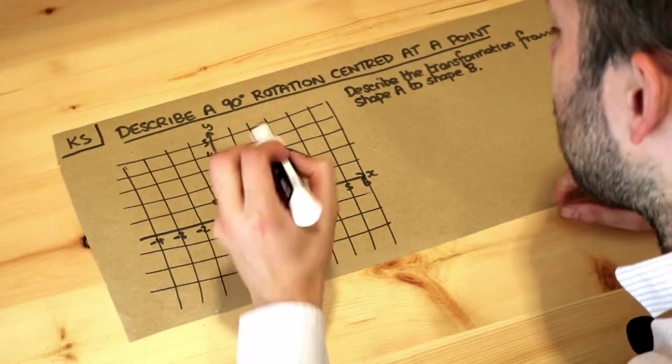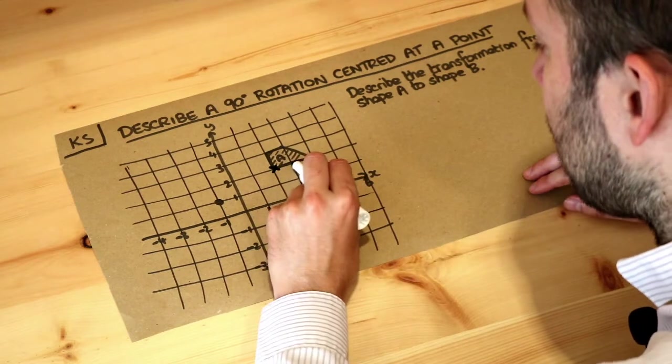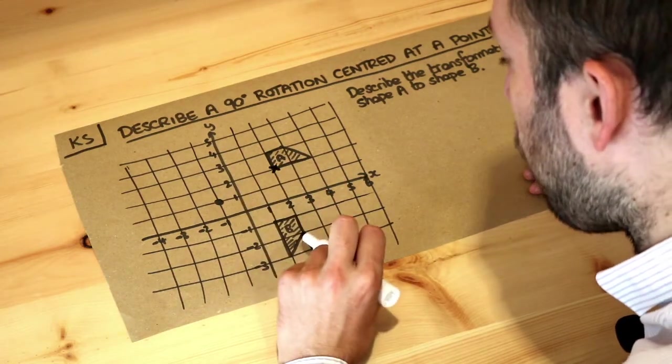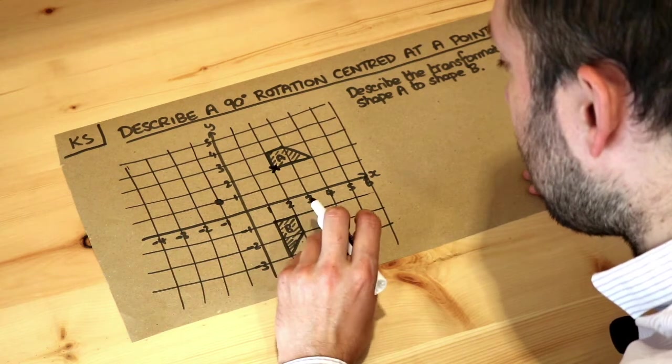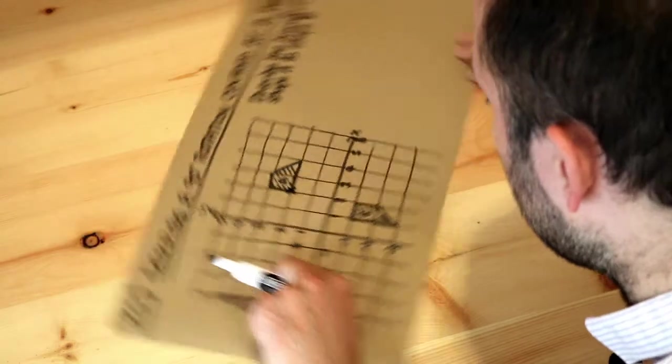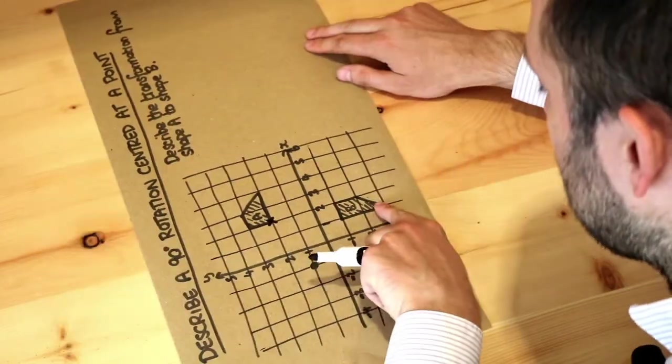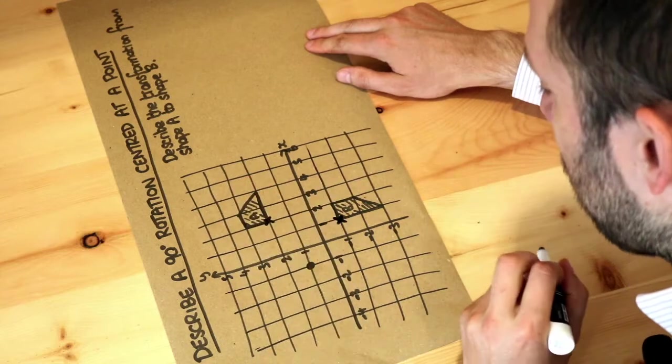But let's check, and the way to check is that we take a point on the shape A, so let's take this right angle, this corner here, and then we look for the equivalent point on B. Now can you see this is the bottom left of the shape? And then you can see here, if the pointy bit is going right, pointy bit's going right, it's this equivalent point here.